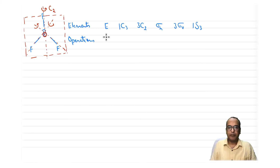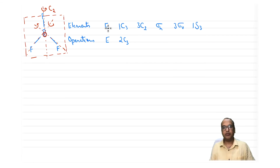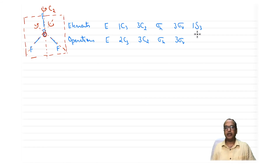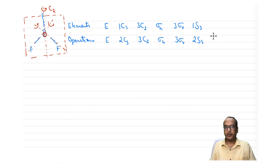For BF3 operations: E gives one. Each C3 generates two non-redundant operations (as seen before), so two C3 operations. Each C2 gives one operation (C2-squared equals E), so three C2 operations. Sigma-h gives one operation. Each S3 generates two non-redundant operations — two S3 operations. Three sigma-v's give three operations. Total: 1+2+3+1+2+3 = 12 operations.